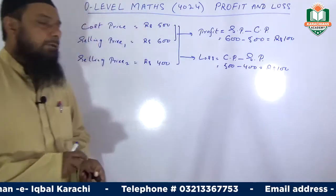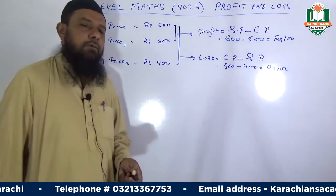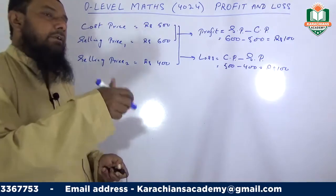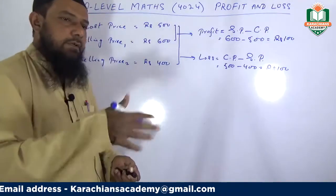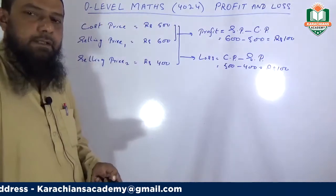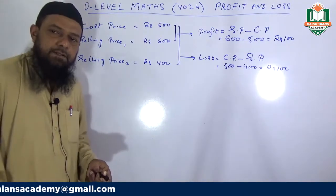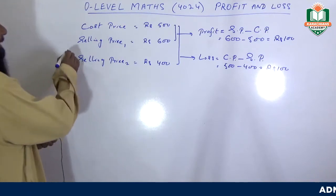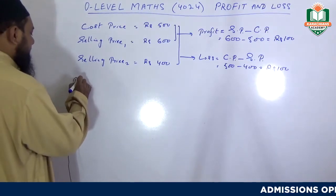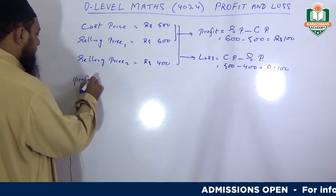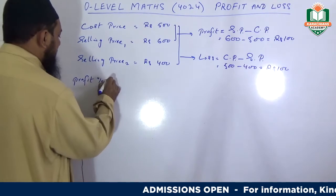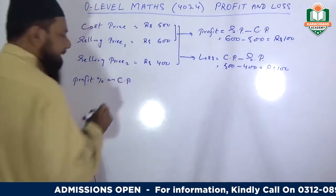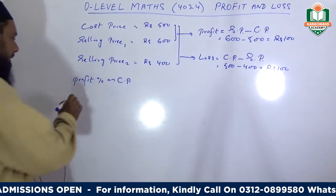How do we find profit or loss on an article? If we purchase this article at a certain amount and then sell it at another amount — those are the two things we are doing. Now how do we find profit or loss on an article?